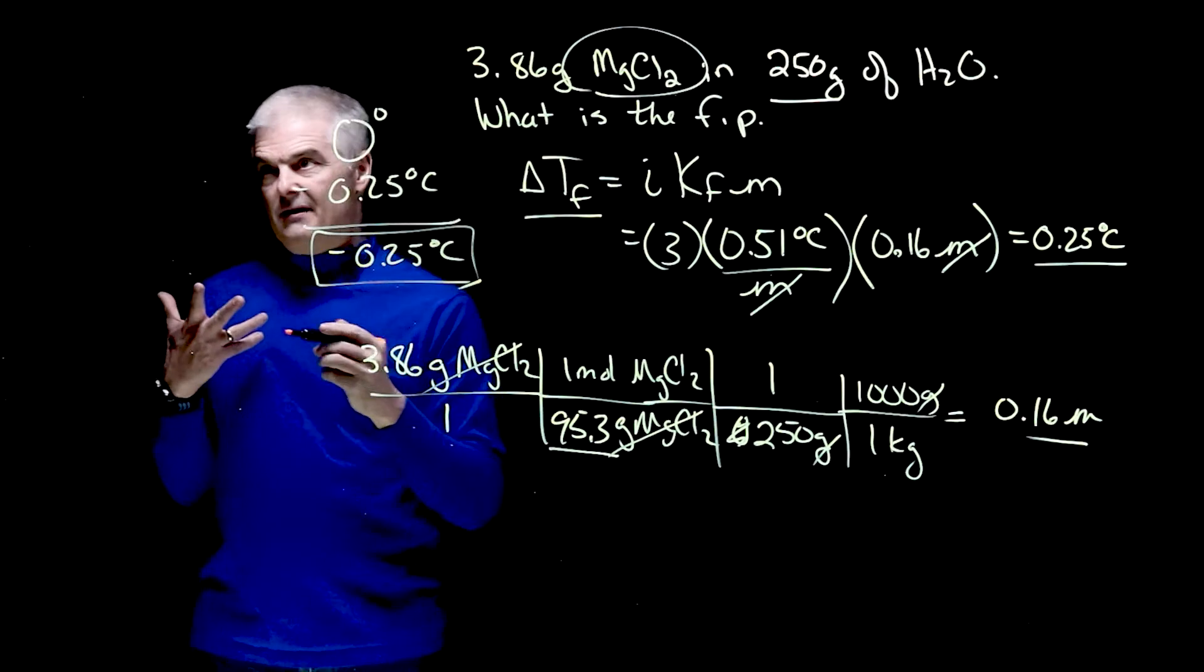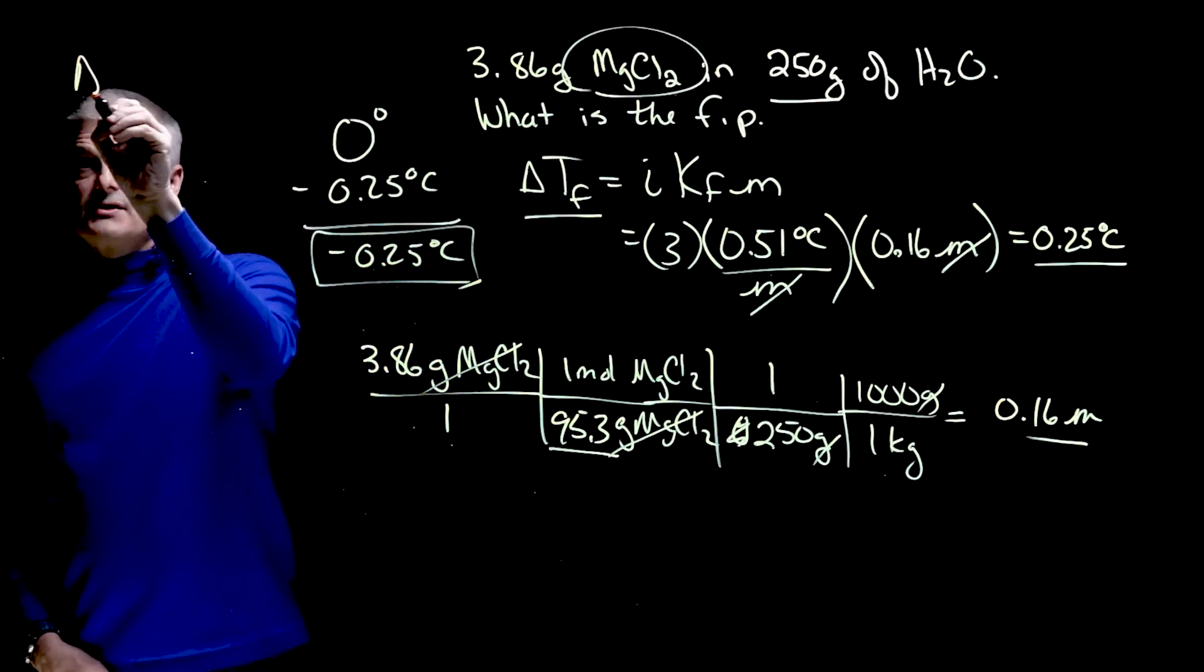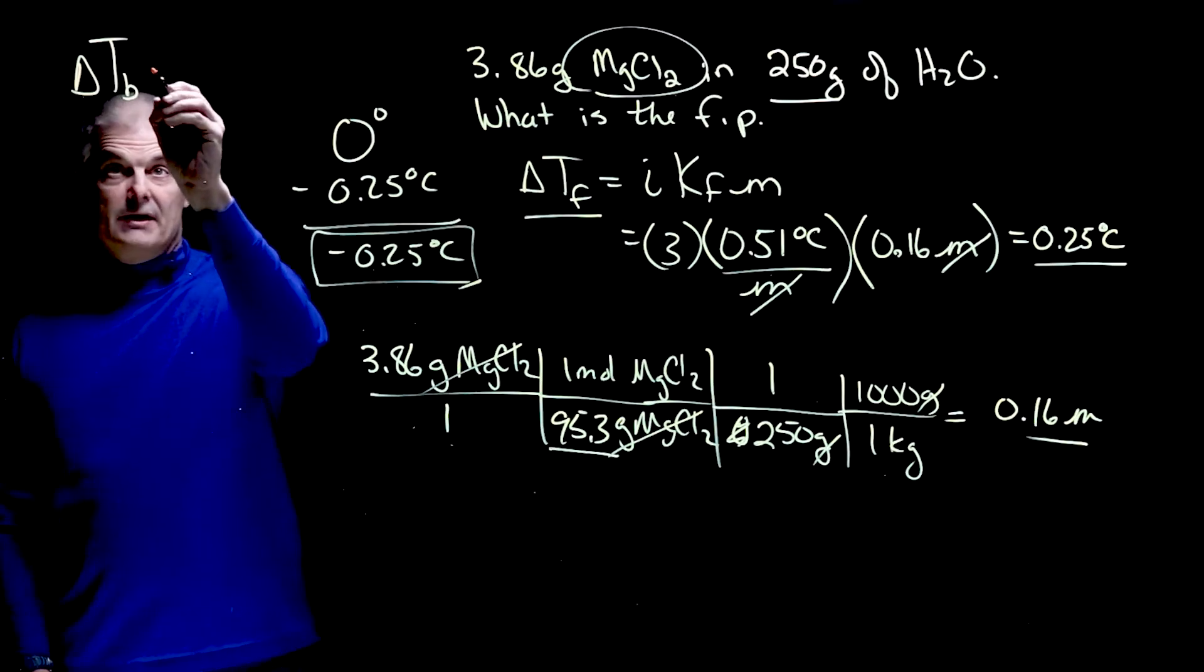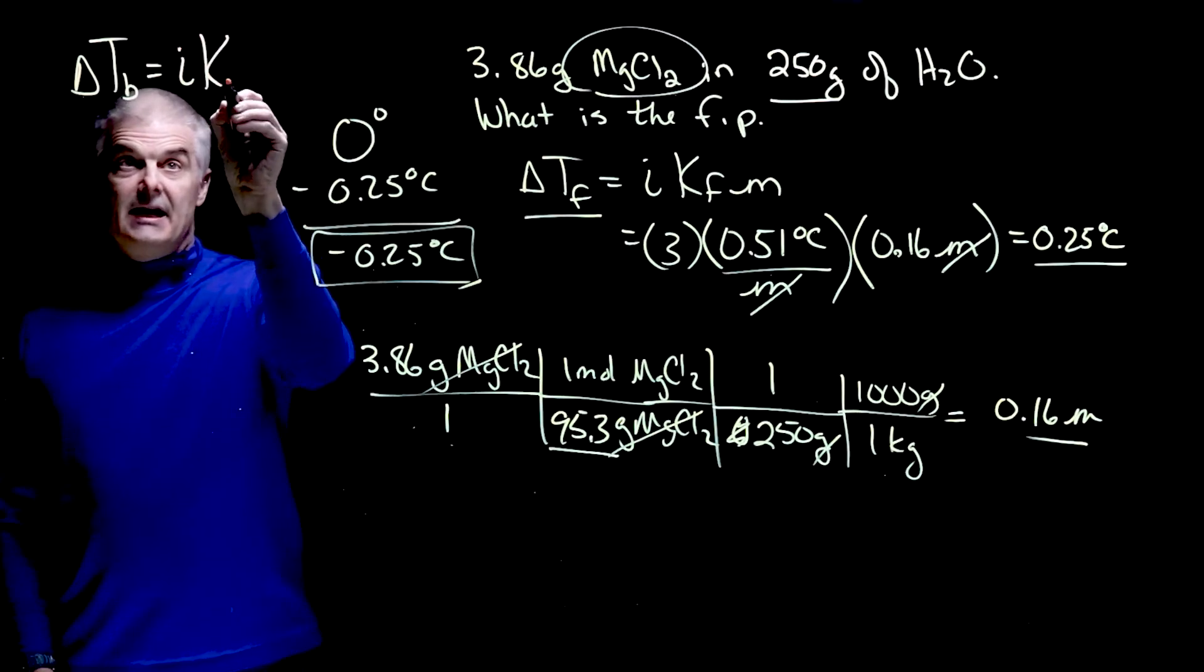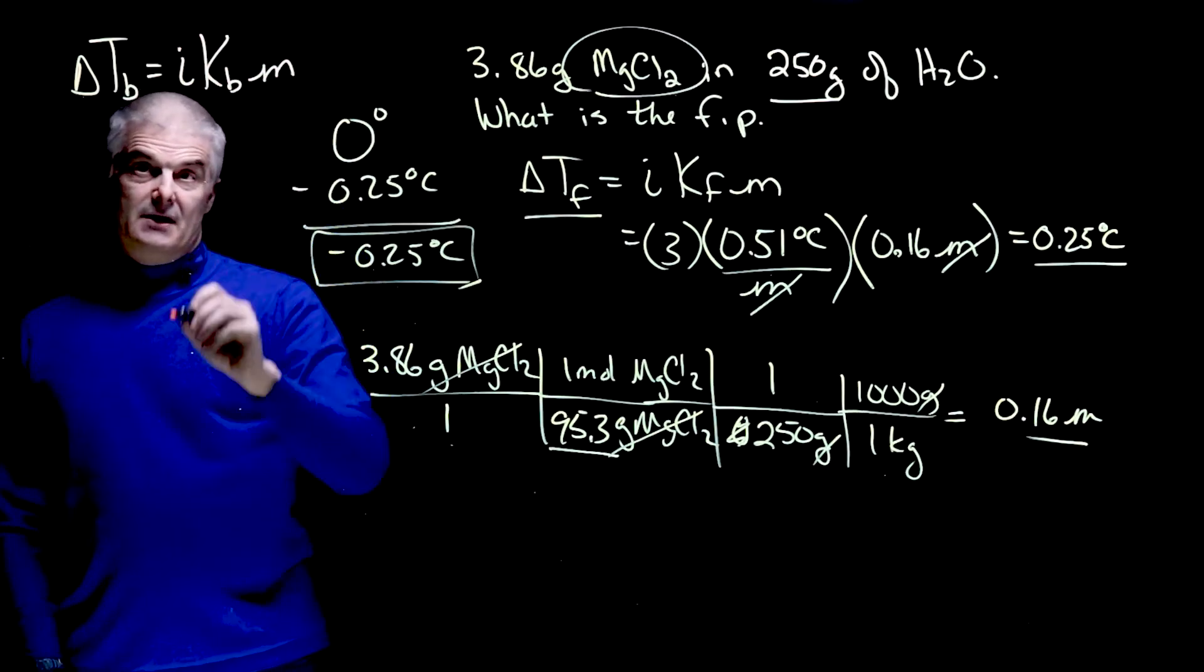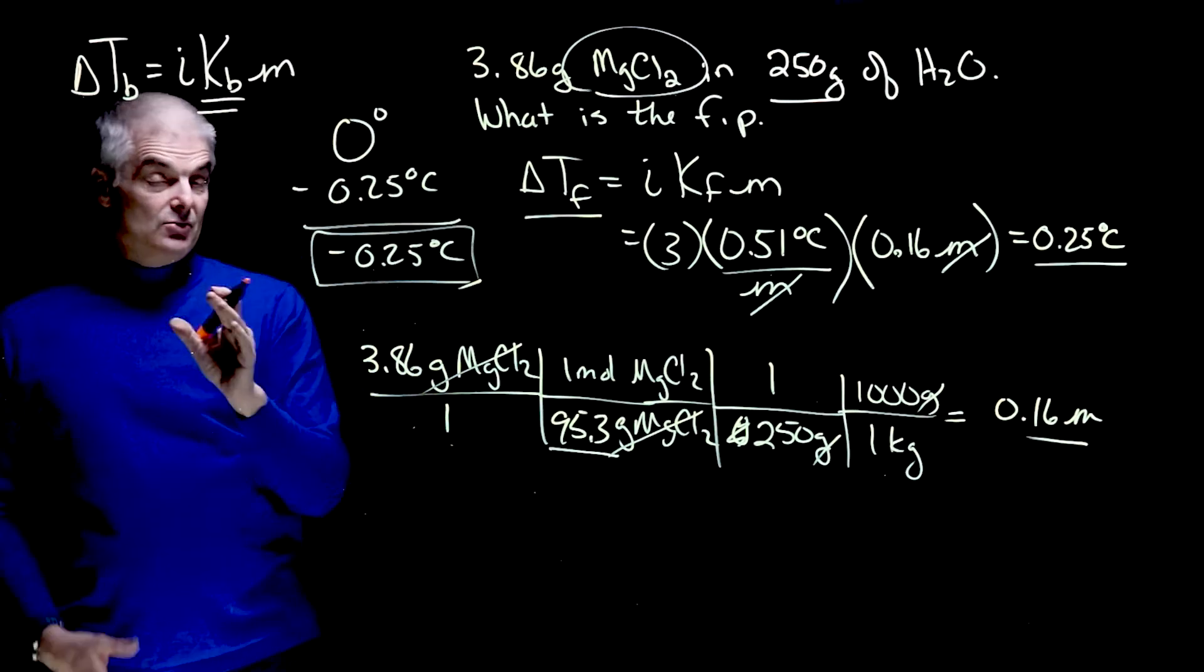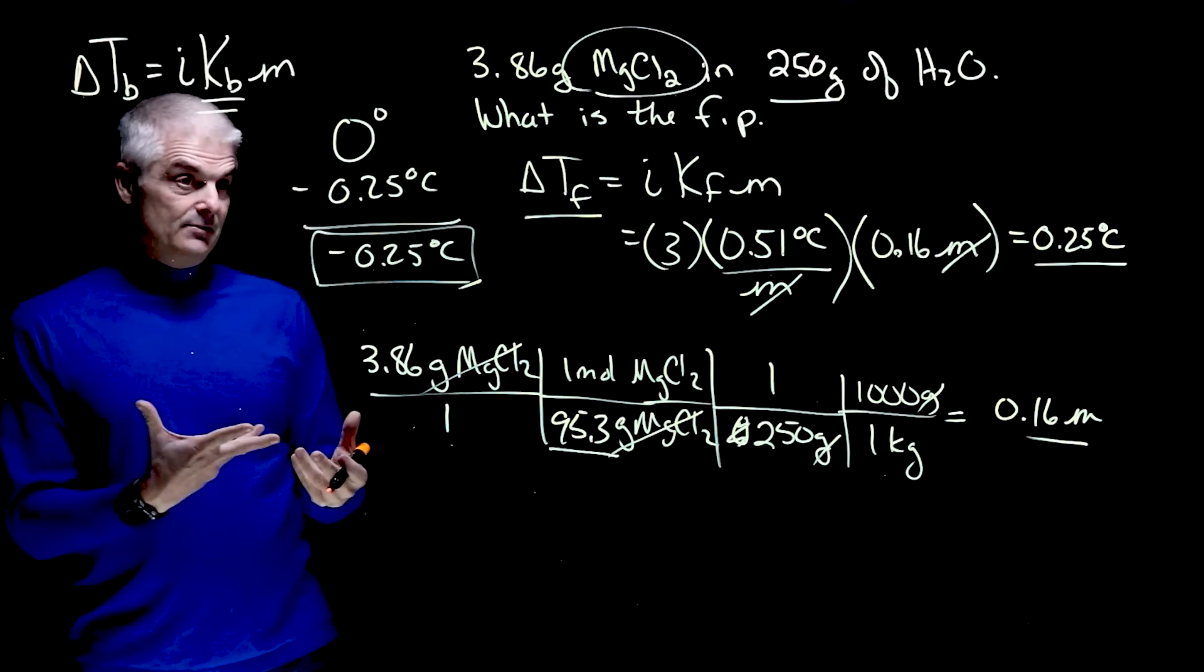What about boiling point elevation? Boiling point is actually quite similar. Delta T sub B, the change in the boiling point, equals I K B times M. And instead of subtracting, you add. Same equation, the KB values are different than the KF values.